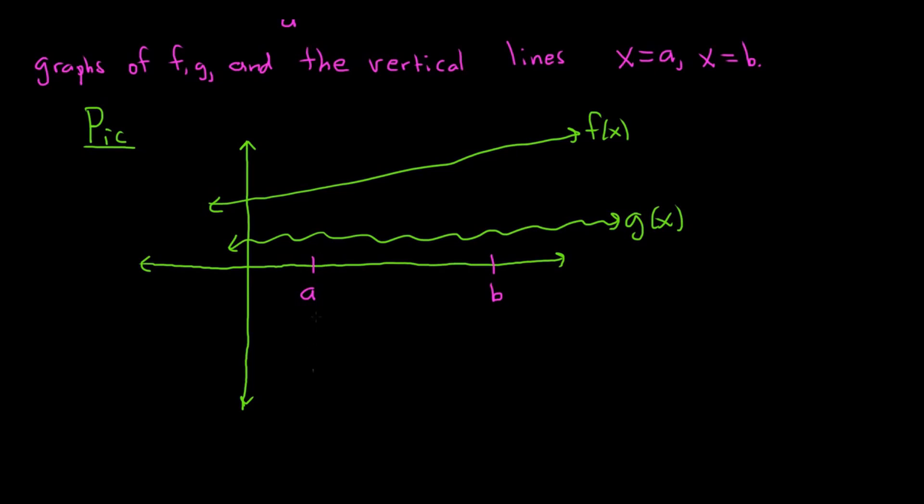And this will be b here. This is actually the vertical line x equals a. And you could think of this as a line x equals b. So we're finding the area of this region here. We're looking for the area of this shaded region, this area bounded by these graphs.